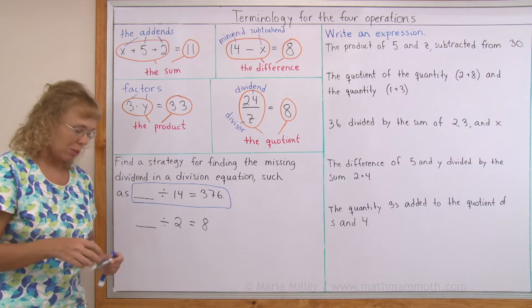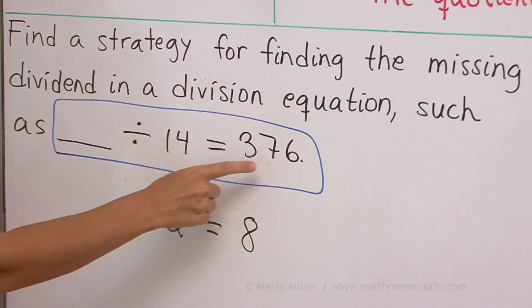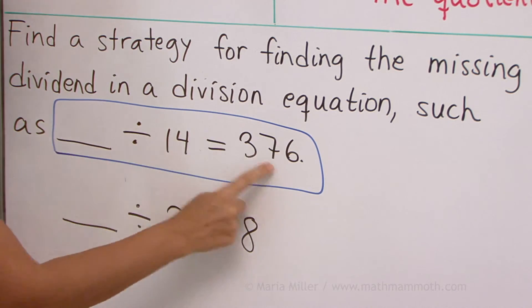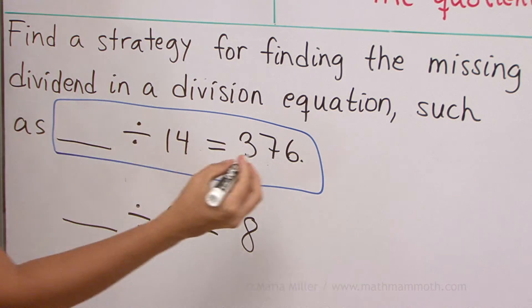We multiply, of course, right? So, over here also, to find the missing dividend, we can multiply those 2. Okay.